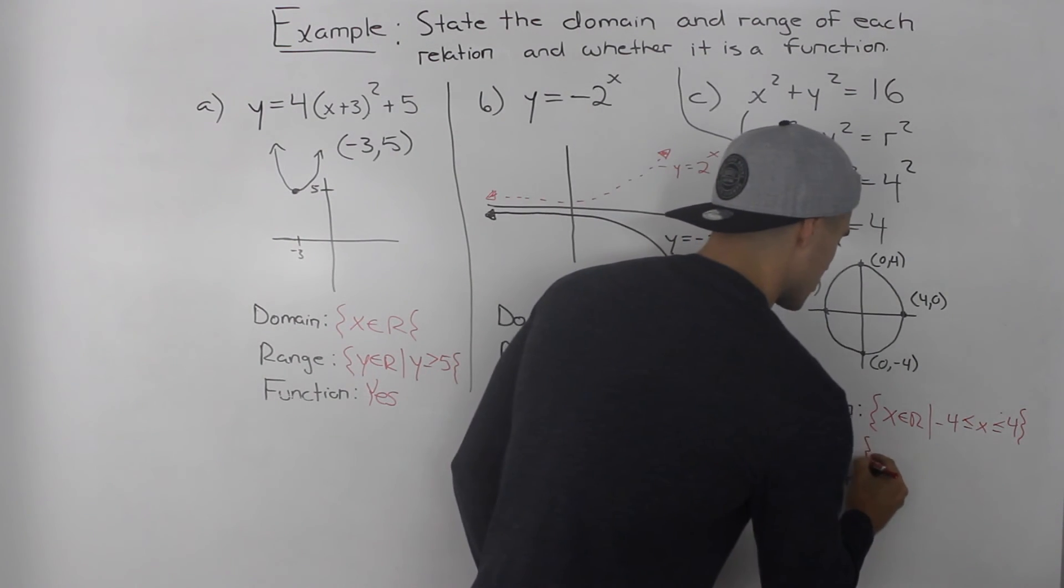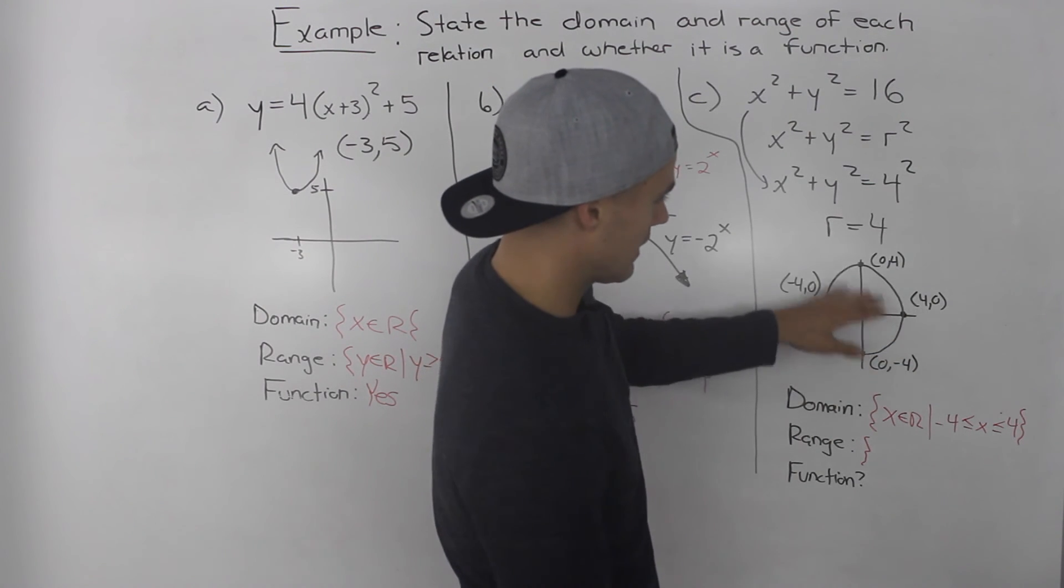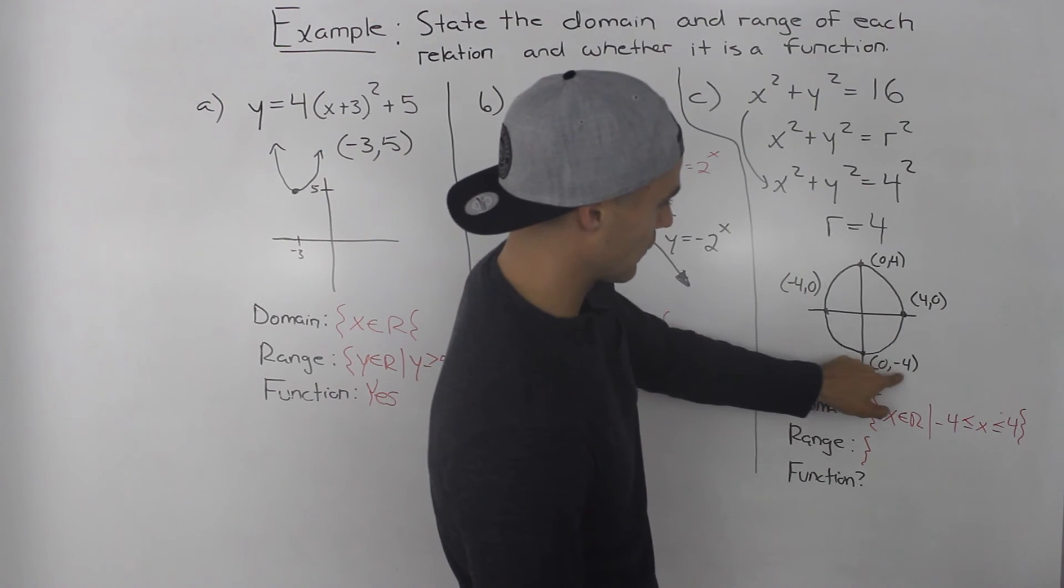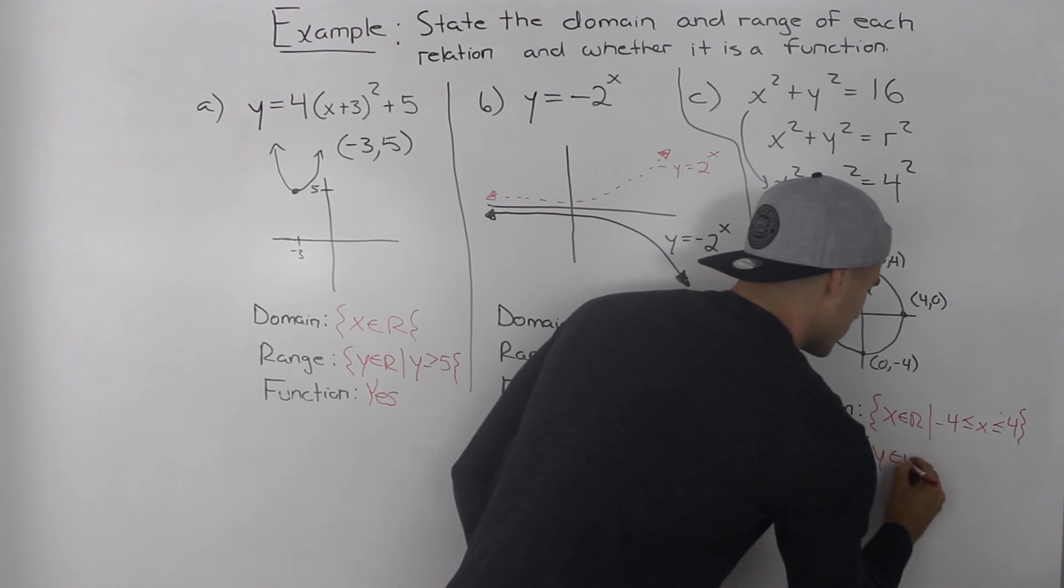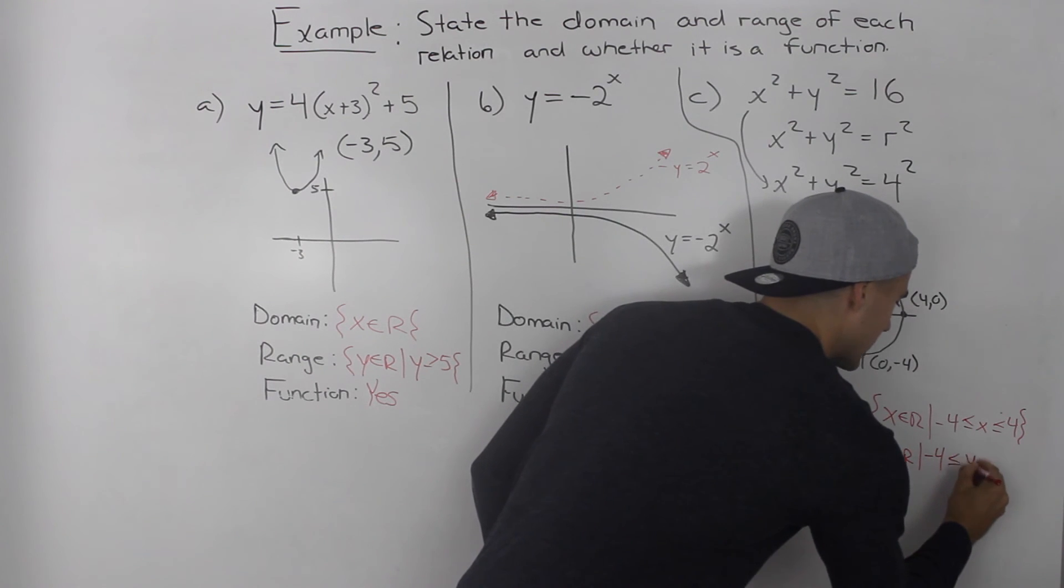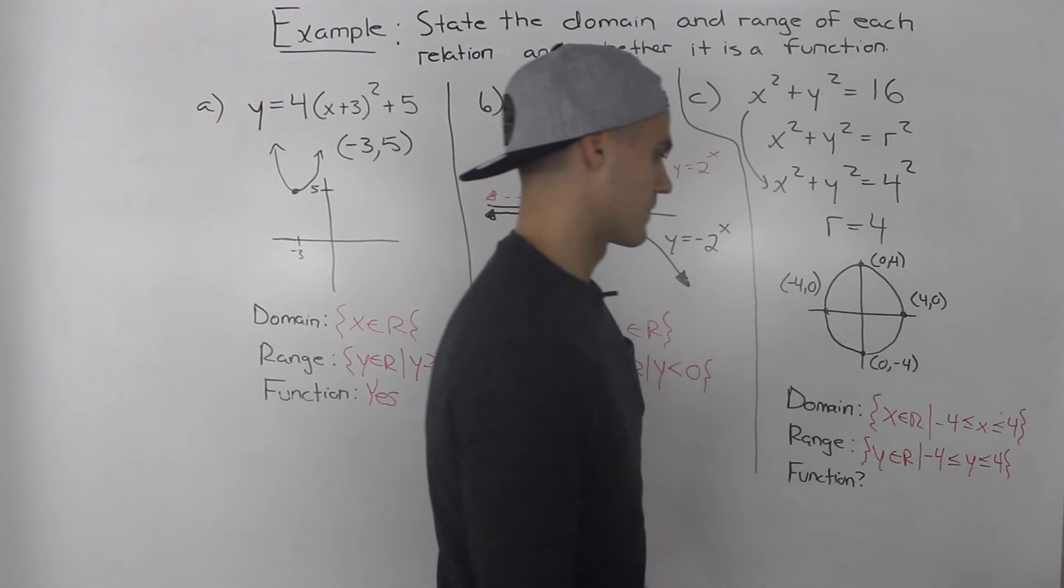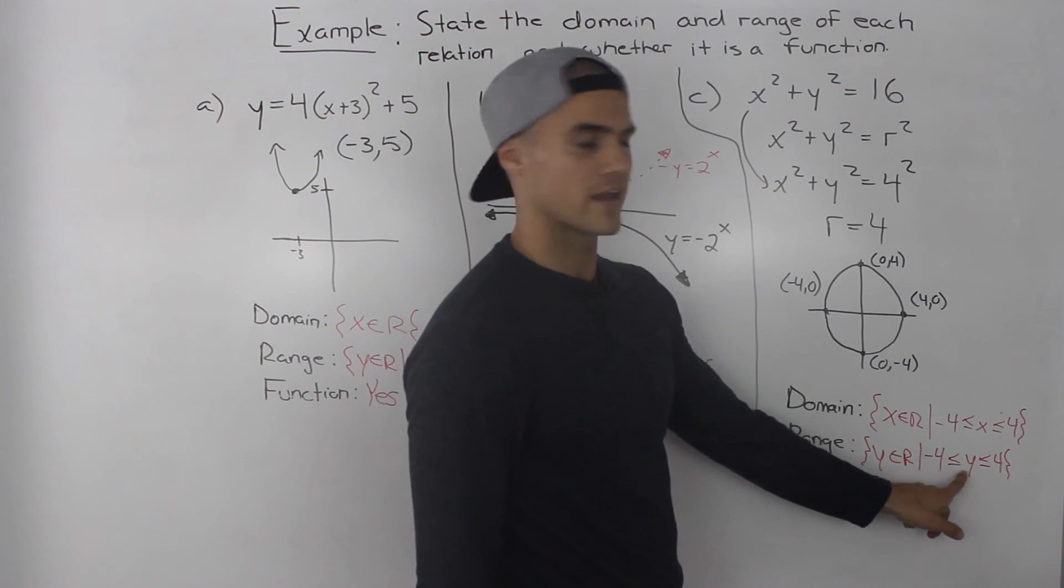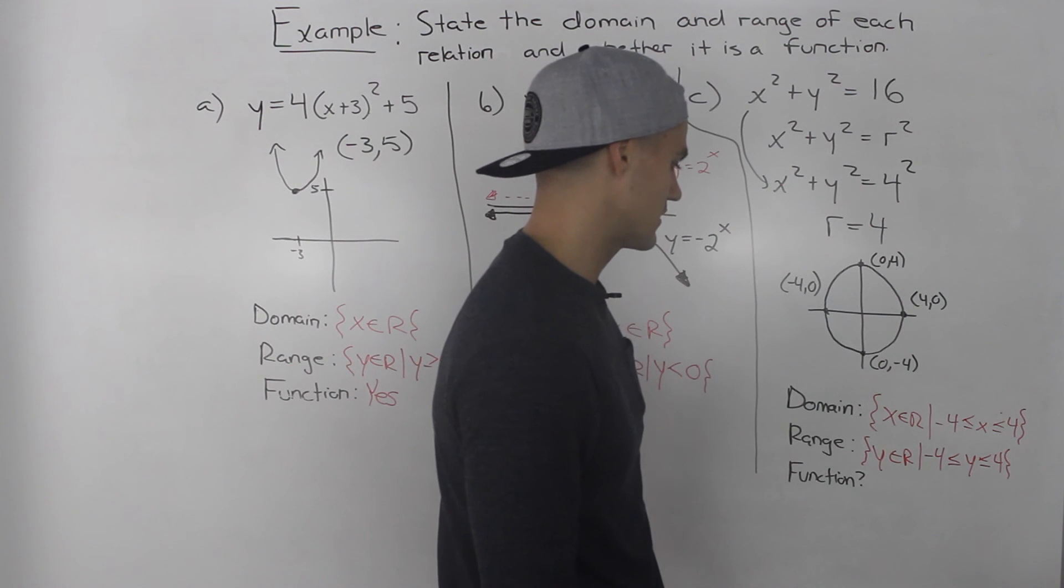Now what about the range? Range is the same thing. The y values can be anything as long as they're between negative 4 and positive 4. So y is an element of real numbers, but y has to be between negative 4 and positive 4. And it's also inclusive of negative 4 and positive 4 because it does hit those values at the intercepts.